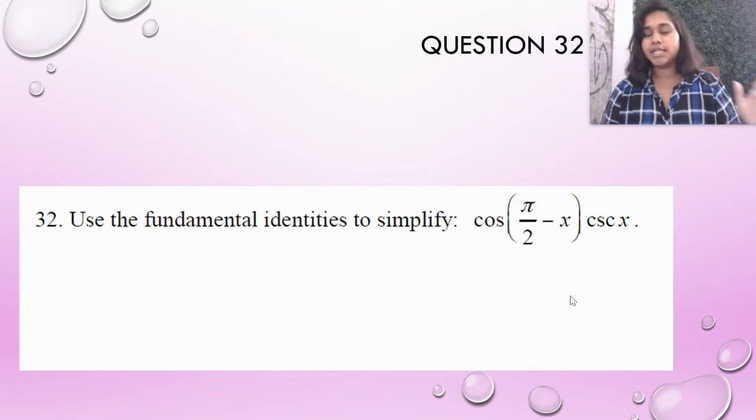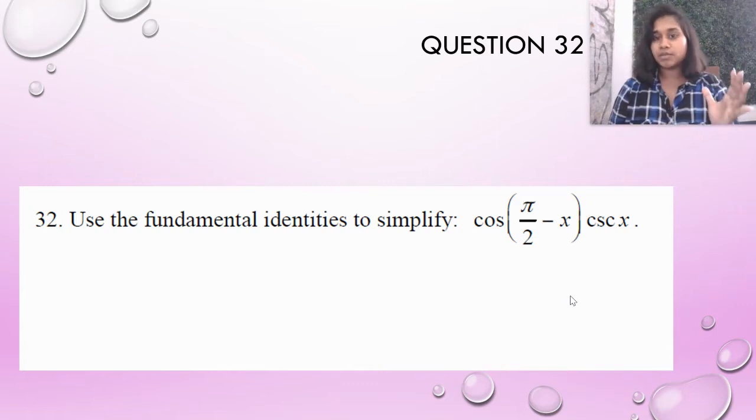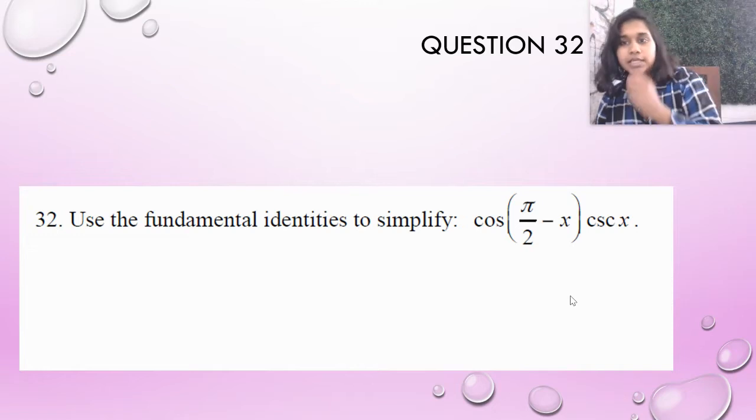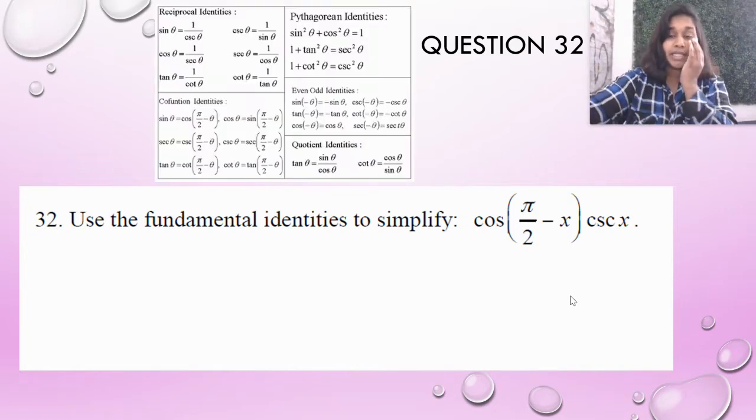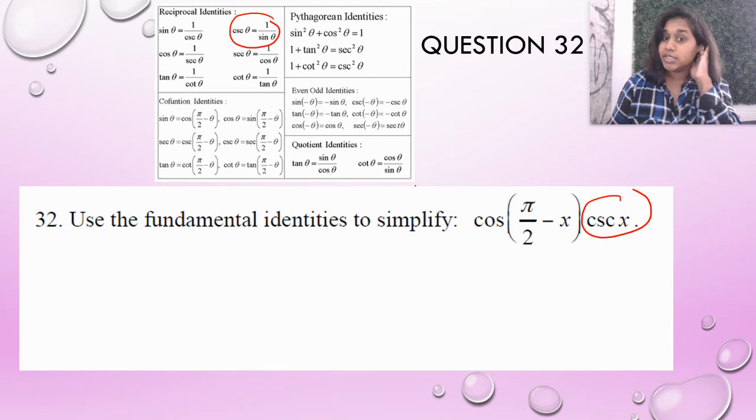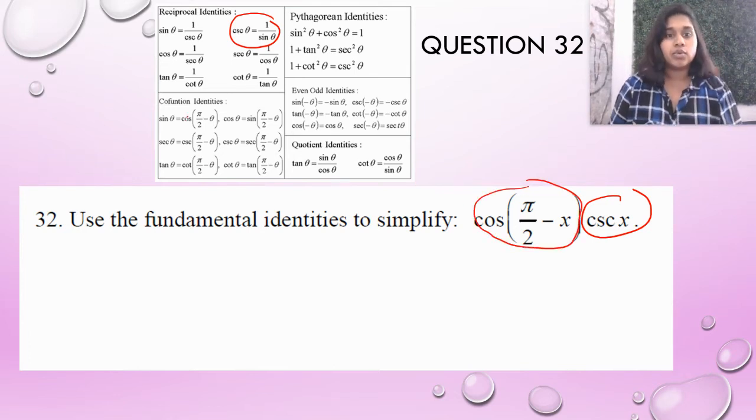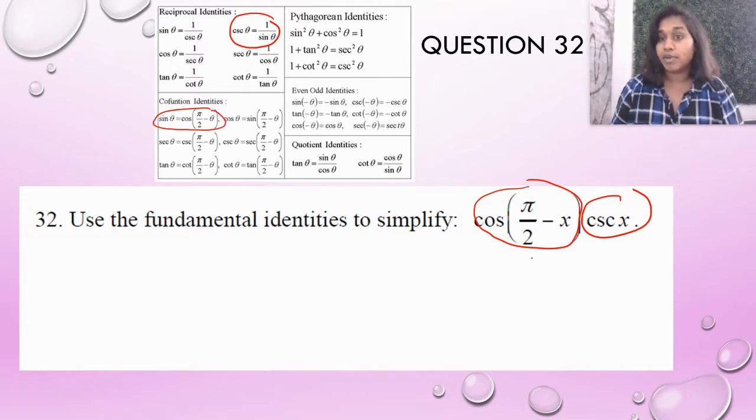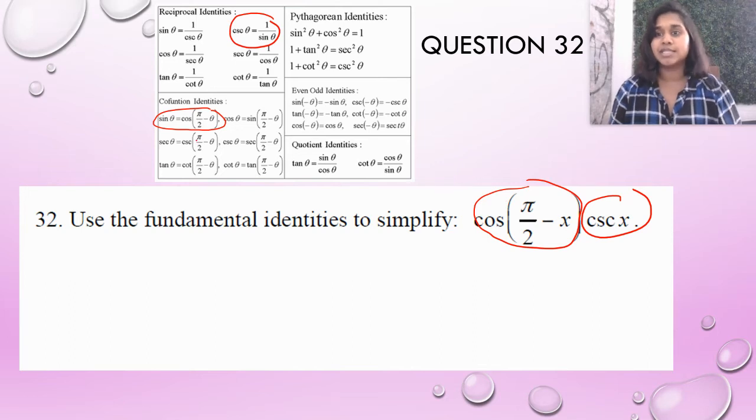Let's use our identities to simplify: cosine of π/2 minus x times cosecant of x. I realize we have a reciprocal identity with cosecant—I can write it as one over sine. I also see a co-function identity. Cosine of π/2 minus x equals sine of x.